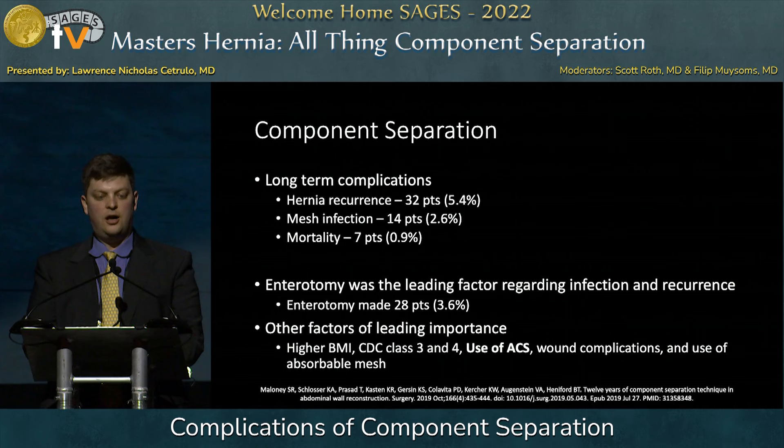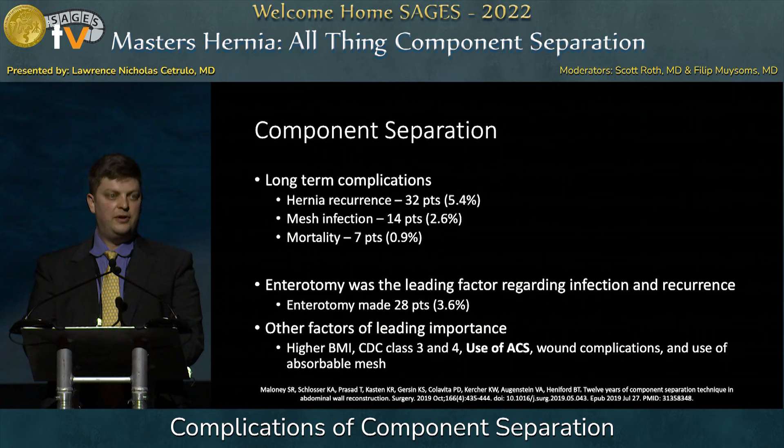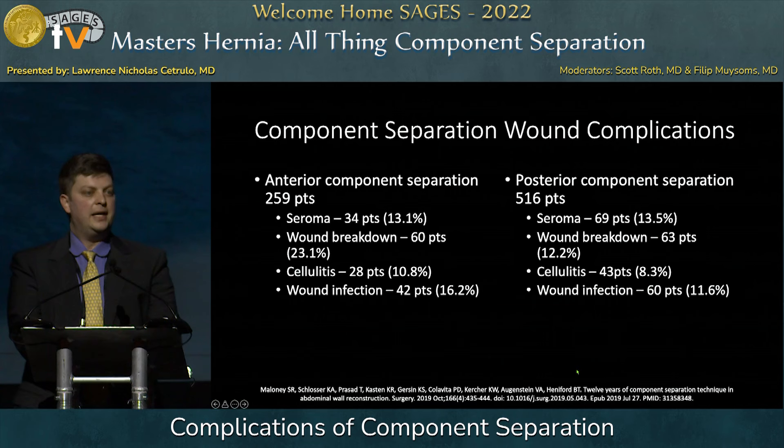Other factors of leading importance for this patient population are higher BMI — class 3 and 4 obesity, BMI 35 to 40 or above — infection rates, use of an anterior component separation, and the use of an absorbable type of mesh, whether that's biosynthetic or pure biologic mesh.